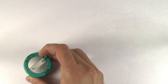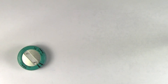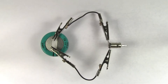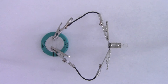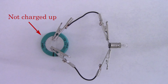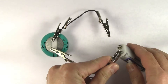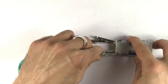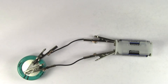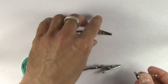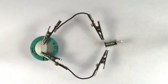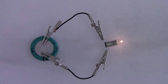Check out this capacitor. Look at what happens if I hook it up to this light bulb. Nothing happened because the capacitor is not charged up. But if we hook it up to a battery first to charge up the capacitor, and then hook it up to the light bulb, the light bulb lights up.